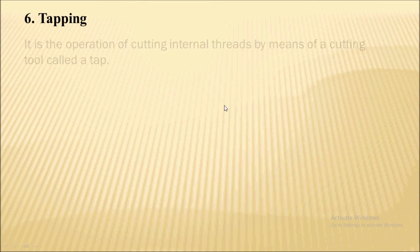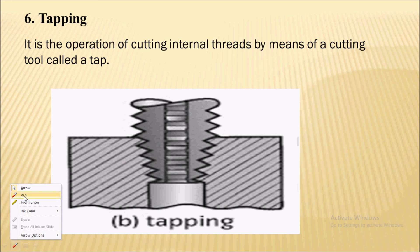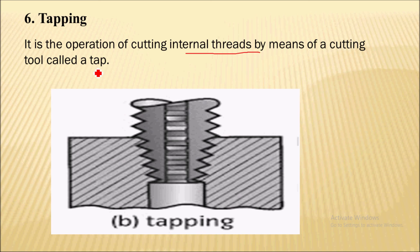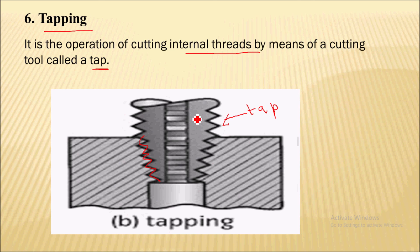The next operation is the tapping operation. Tapping is the operation of cutting internal threads by means of a cutting tool called a tap. If we want to create internal threads in the workpiece, we use the tapping operation. The tap tool is essentially a bolt which has external threads cut onto it. This tap is rotated and fed into the workpiece to create the internal threads. This is all about the tapping operation.